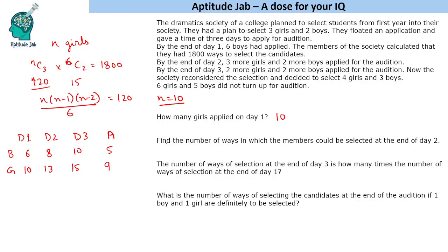The second question asks: find the number of ways in which the members could be selected at the end of Day 2. At the end of Day 2 there are 13 girls, which can be selected in 13C3 ways, and 8 boys that could be selected in 8C2 ways. 13C3 is 286 and 8C2 is 28. Multiplying 286 by 28 gives 8008, which is the answer to the second question.